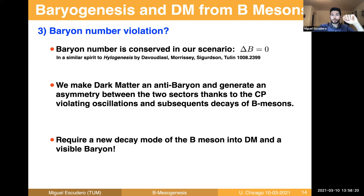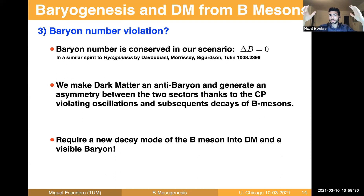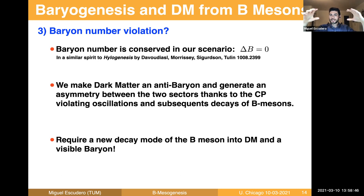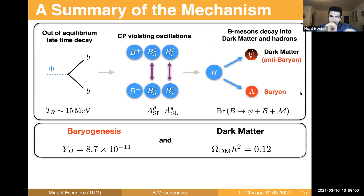The choice to conserve baryon number is motivated by the fact that we haven't observed any baryon number violating process. One could choose to actually violate baryon number in the decay, but then you don't have an understanding for dark matter, and you are reheating the universe at temperatures of 10-20 MeV. You don't have much cosmological time to do anything, and it would likely propagate at the loop level to proton decay. So baryon number conservation is the preferred choice here.